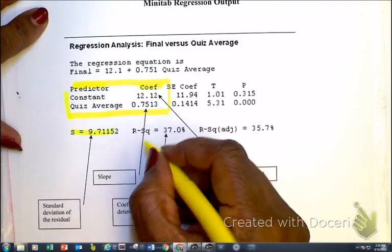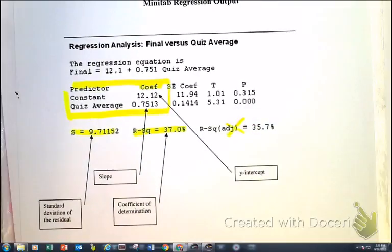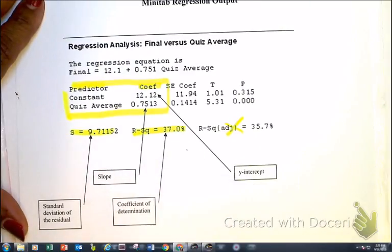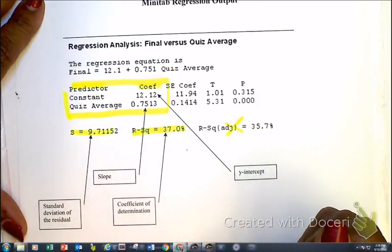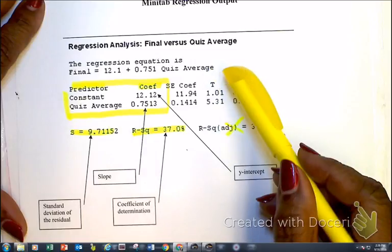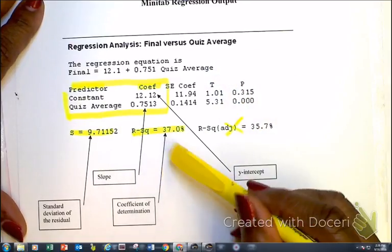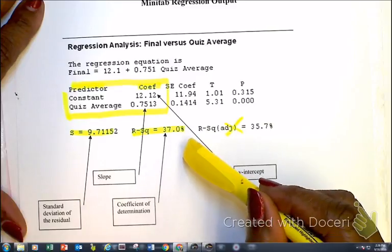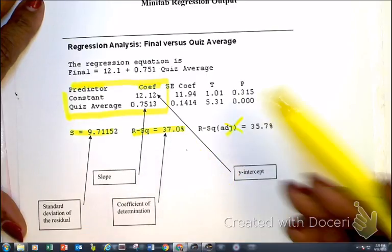Notice here we've got our r-squared. We don't deal with the adjusted. R-squared is your coefficient of determination. We're talking about 37% of the final exam scores are going to be predicted based on that least square regression line, given the quiz averages. We can find our correlation coefficient, the linearity strength and direction, after we find the square root of that.